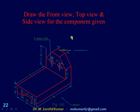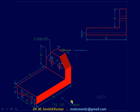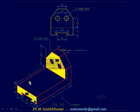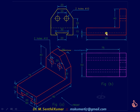Draw the three different orthographic views for the object shown here. This is the V direction for the front — we see from here. This is the area for the front view. For the top, this is the area for the top view. These are the areas for the side. So this is the front view, top view, and side view.